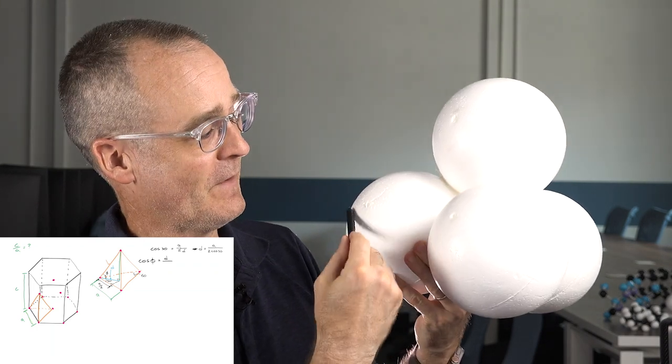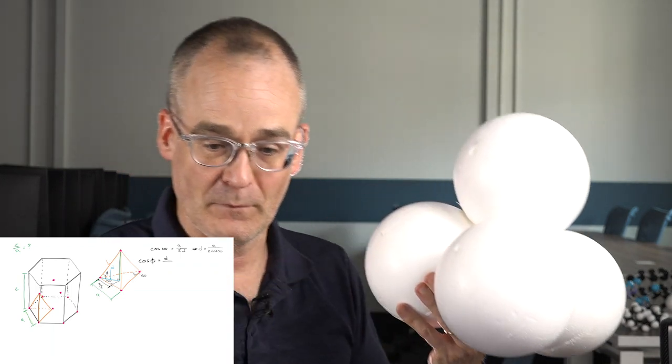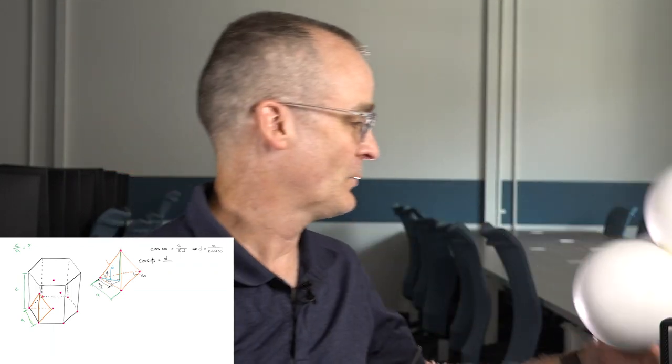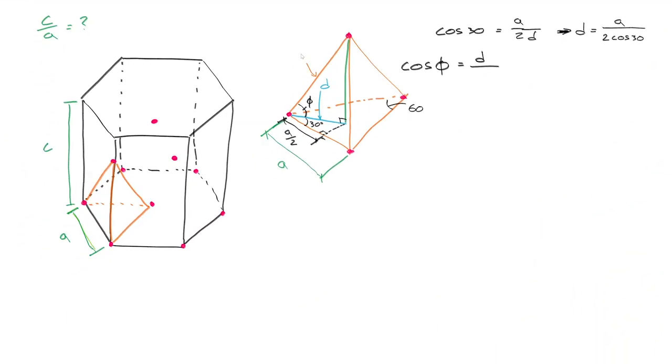This is the distance between close-packed atoms in the basal plane. Well this distance here going up to the atom in the middle, that's got to be A as well. So this orange line that I've drawn in there is A. Going back to cos Phi, cos Phi is D over A. Well we established what D was earlier, so D is A upon 2 cos 30. We said cos Phi was D over A, so we've got A in the denominator, those of course cancel out. Then Phi is going to be equal to cos inverse of 1 over 2 cos 30.